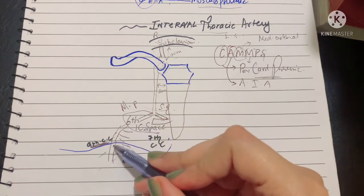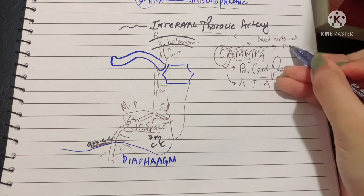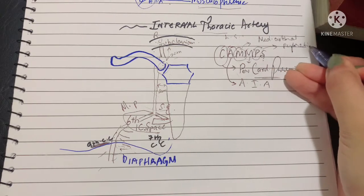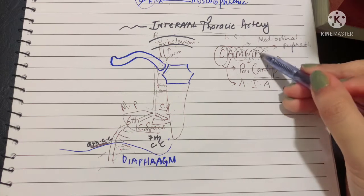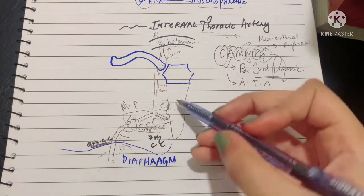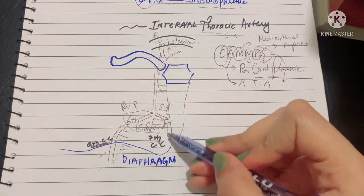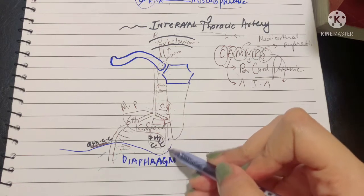Then we have P for the perforating branches, which supply your mammary gland. Finally, the superior epigastric, which is its other terminal branch. The superior epigastric artery descends to the level of the seventh costal cartilage, where it pierces the foramen of Morgagni or the space of Larrey to enter your abdomen in the rectus sheath.